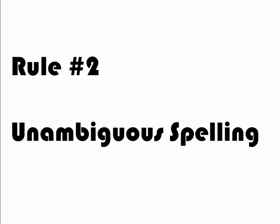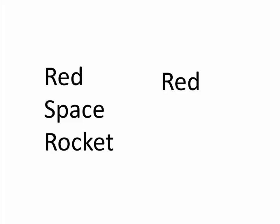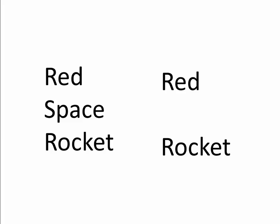Rule number two: don't have ambiguous spelling — have unambiguous spelling. If people can get it wrong, they will get it wrong and they'll end up not going to your site — they'll go to somebody else's site. For instance, Red Space Rocket, the name of my site, should be a really unambiguous name, but some people when they hear it think it's spelled differently. It is ambiguous, so it is not an ideal domain name. So we throw out that option.